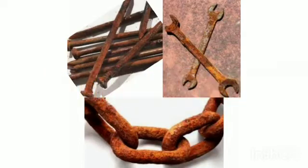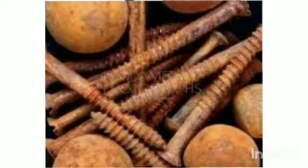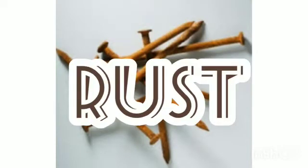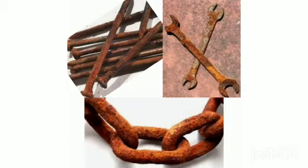Tarnishing of metals. Tarnishing of metals is a great problem in our day-to-day life. A reddish-brown substance called rust is formed on the surface of the metals.